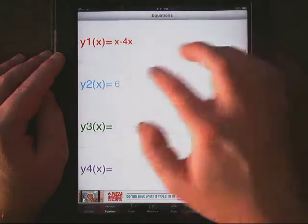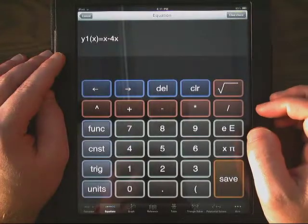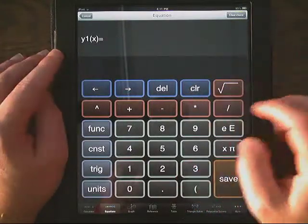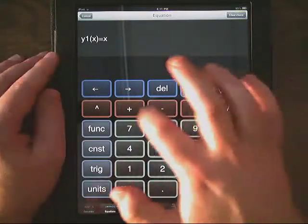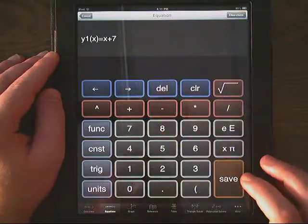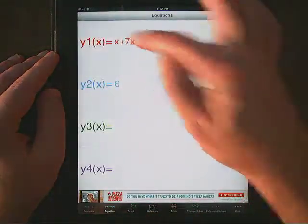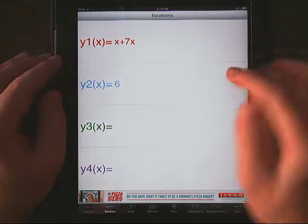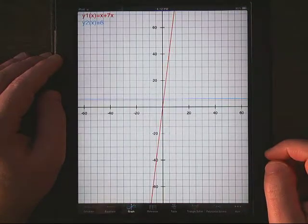To change these equations, just come up here, click inside of them, and you can clear them out. So I want to do something like x plus 7x, hit save, and that will be the red line. Then the blue will be the blue line when I come over to my graph.